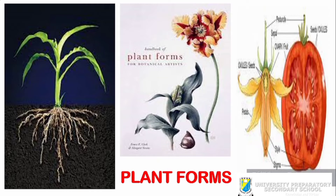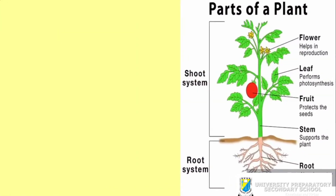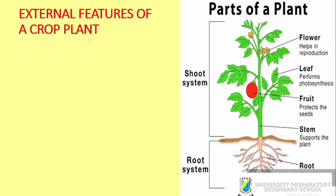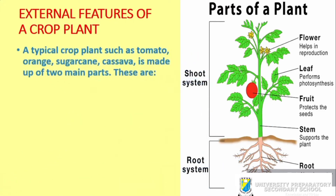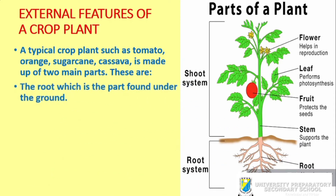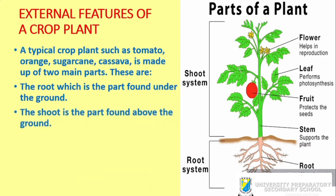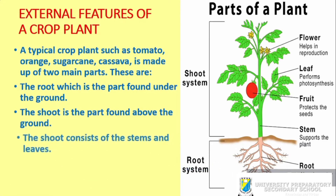Now, what are the parts of a plant? There are two major parts of a plant: the ones that are underground and the ones that are above the ground. The part below the ground is referred to as the roots. The part above the ground is the shoot. As shown in the diagram here, we have the shoot system above the ground and the root system below the ground.